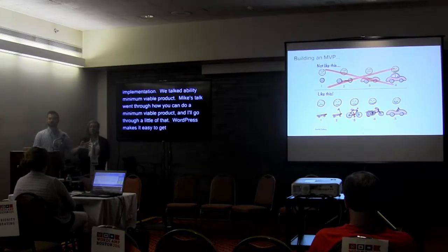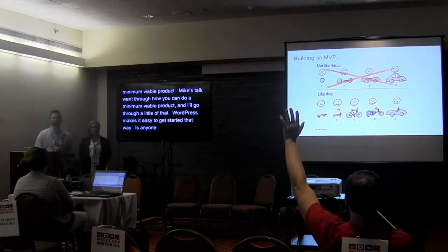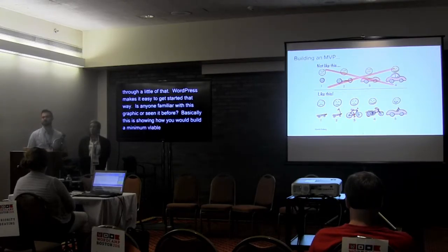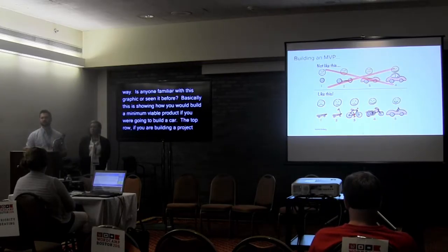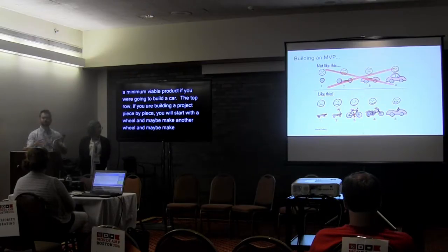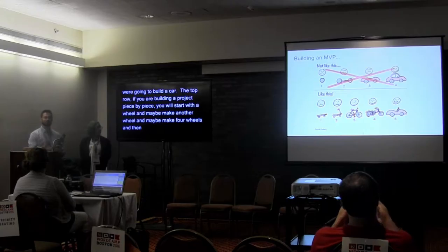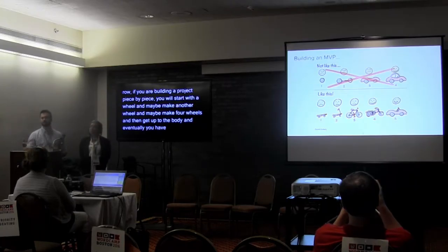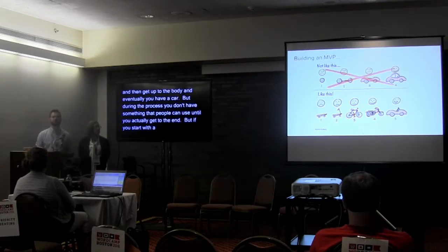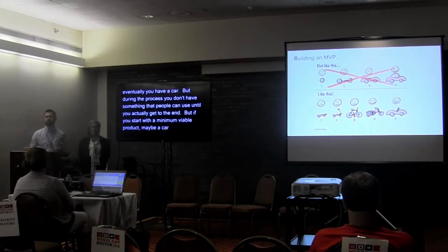This graphic is showing how you build a minimum viable product if you were going to build a car. On the top row, if you are building a project piece by piece, you're going to start with a wheel, make another wheel, eventually get four wheels and up to the body, and eventually you have a car. But during that whole process, you don't have something that people can use until you actually get to the end.